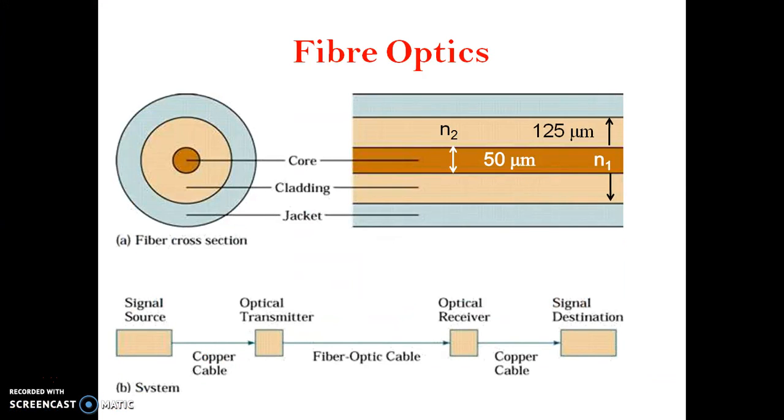Optical fibers are flexible, hair-thin transparent fibers used for propagation of light. They consist of a central cylinder called the core surrounded by cladding. Cladding is in turn surrounded by a jacket.